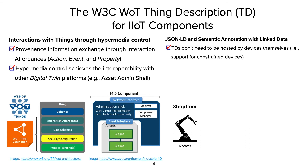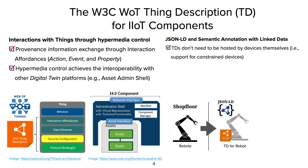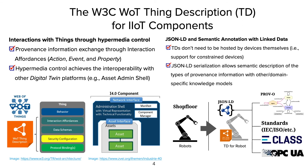Another benefit of TDs is that they can be serialized in JSON-LD format, which can then be used to describe constrained primitive devices on the shop floor, because they do not have to be hosted on the devices themselves. With this, we can give semantic descriptions to the information in the TD by linking to other ontologies like PROV-O or domain-specific knowledge models that are used in the industry.